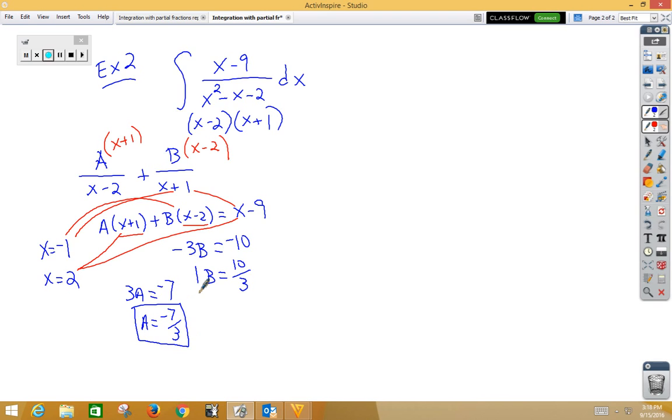Now, realize we don't flinch over the fractions because sometimes we get fractions. Separate the original problem now into two pieces. My A was negative 7 thirds over x minus 2 dx plus the integral of my B was 10 thirds over x plus 1 dx.